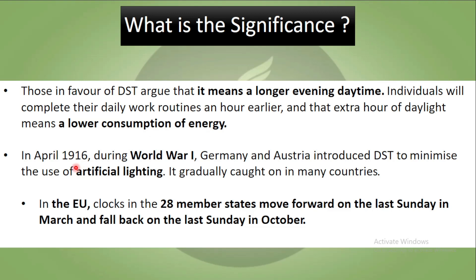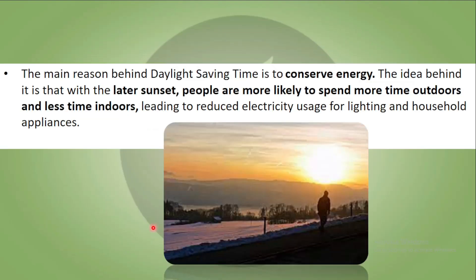In April 1916, during World War I, Germany and Austria introduced DST to minimize the use of artificial lighting, and gradually many countries adopted it. In the European Union, the clocks in the 28 member states move forward on the last Sunday in March, and fall back on the last Sunday in October.